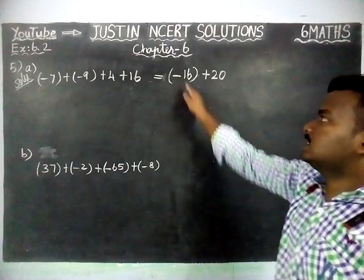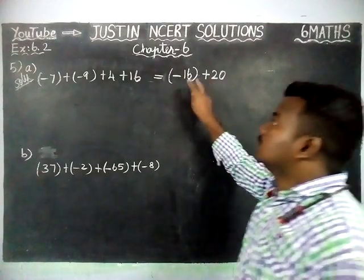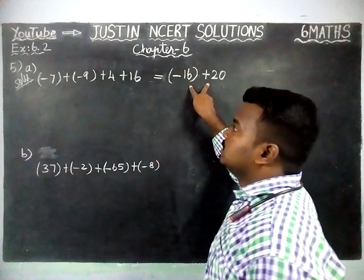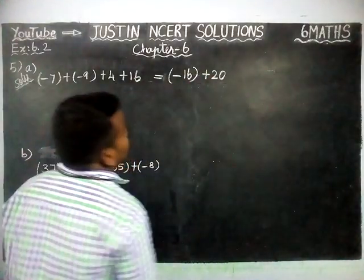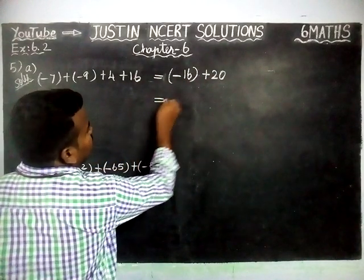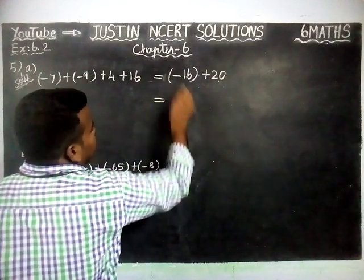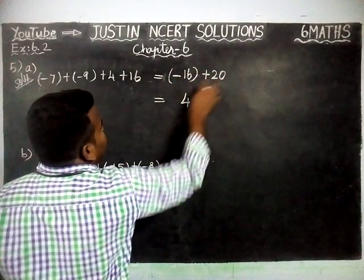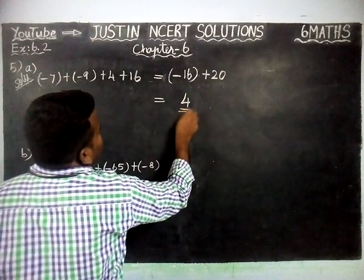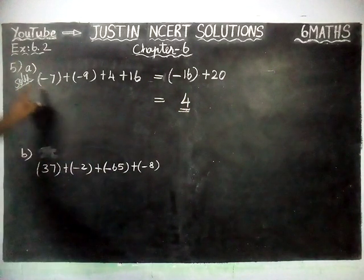Now, minus 16 plus 20 is here. Now, these 2 are different signs. If it is different signs, we have to find the difference. Difference between 20 and 16 is equal to 4. Here, the greatest number is 20. In front of 20, plus sign is there. So, plus 4 is the correct answer for part A.